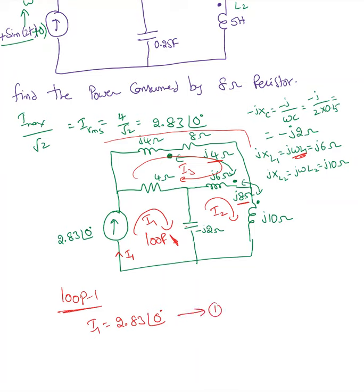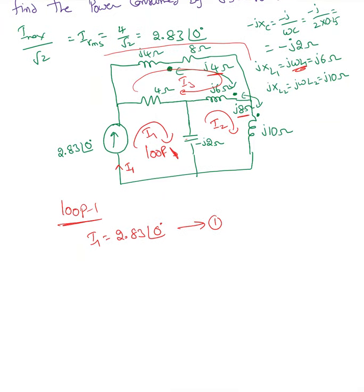I don't need to write all the loop equations for Loop 1, even if I have a coil with mutual inductance there — my I1 is still going to be 2.83∠0°. Now moving to Loop 2: we need to apply KVL because there is no current source in any outer branch. According to my I2 direction — positive, negative, positive, negative, positive, negative.